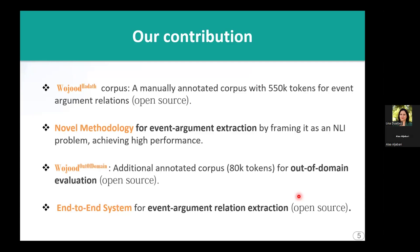Our key contributions are: first, we developed the Wujud Hadath corpus, which consists of 550,000 tokens manually annotated with event-argument relations. We also introduced a novel methodology for event extraction by framing the task as a natural language inference problem, achieving high performance. In addition, we created the Wujud out-of-domain corpus, an additional annotated corpus of about 80,000 tokens designed for out-of-domain evaluation. Finally, we developed a novel end-to-end system for event relation extraction. I will now turn it over to my colleague Lina to discuss the corpus.